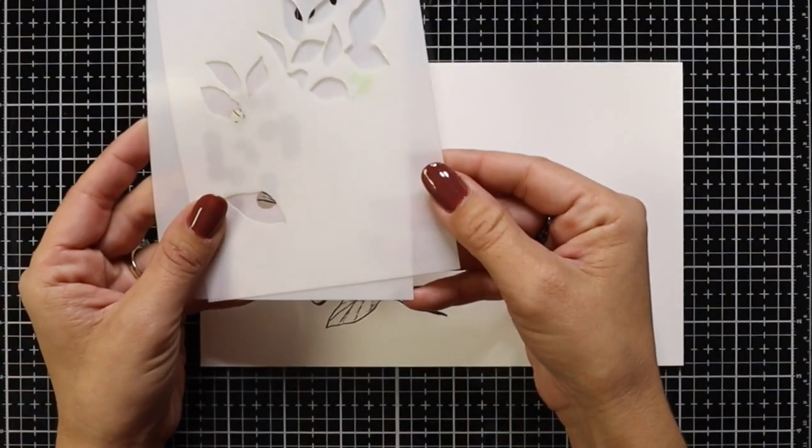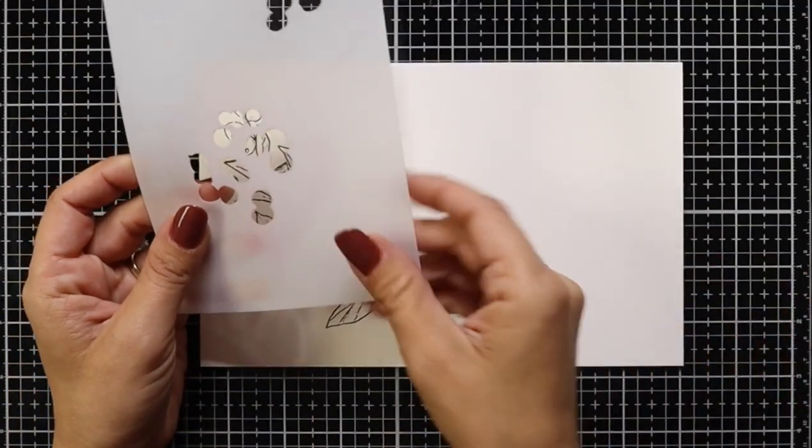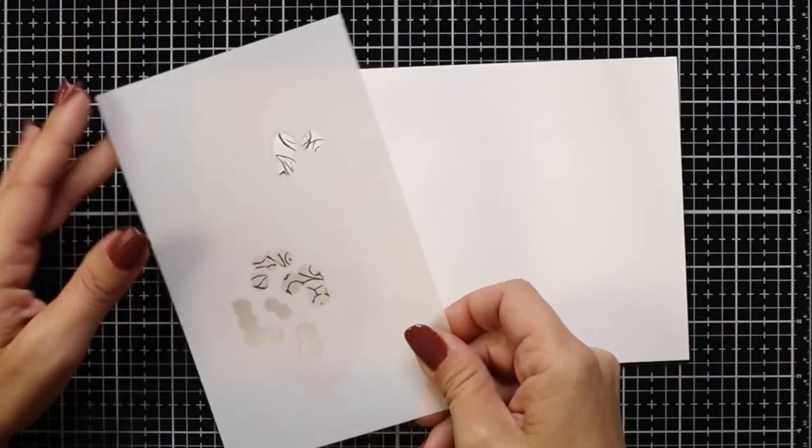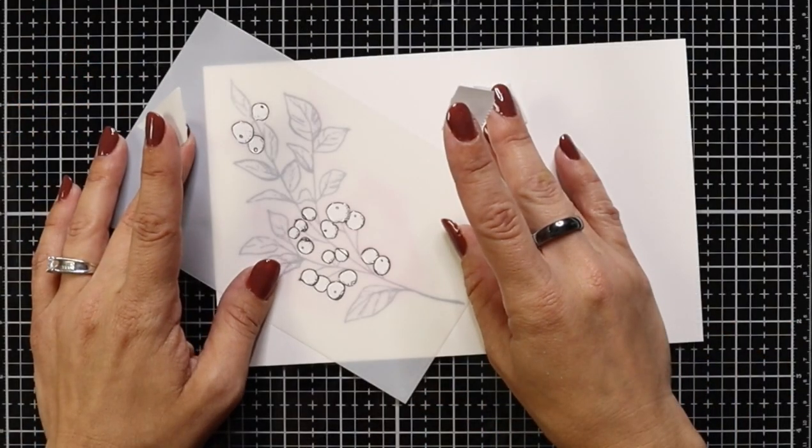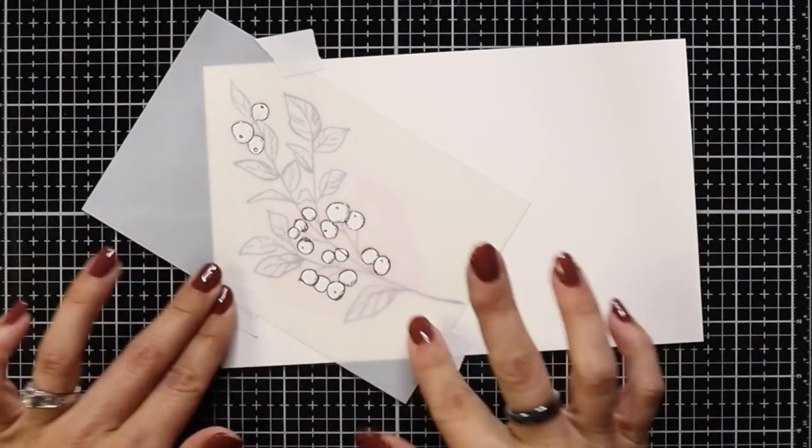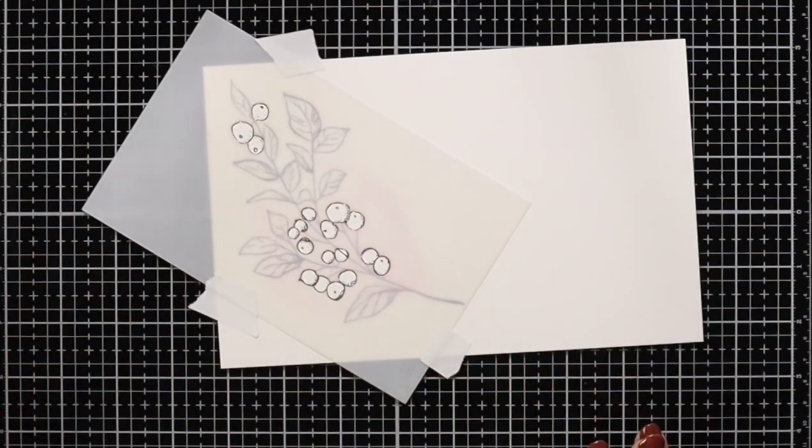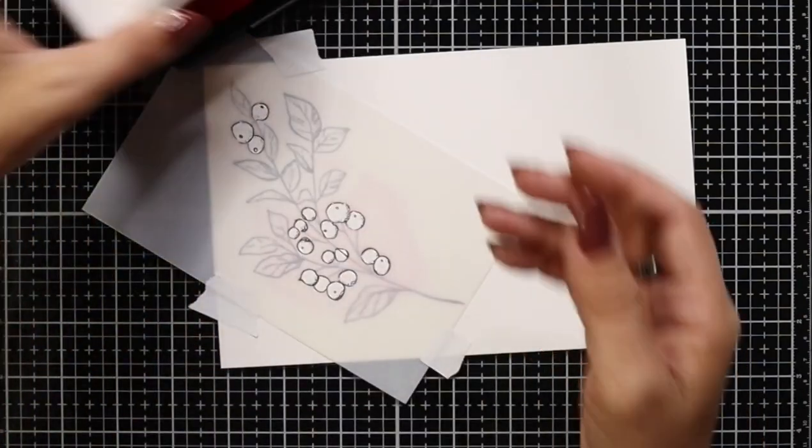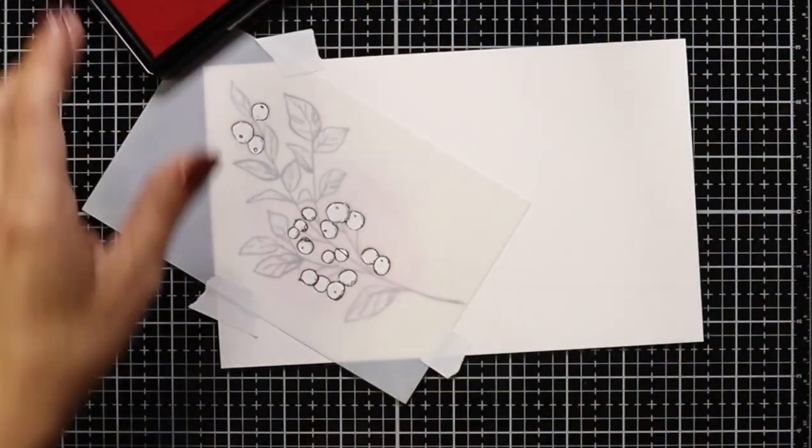Here we have the two-piece stencil set, which is what I'm going to be using. I'm taking the first layer, which is the berries. I'm going to line that up over my image and then hold it in place with post-it tape. You could use some pixie spray, but I really didn't see the need to since there is such a small area to work with.